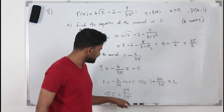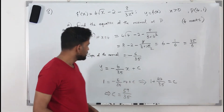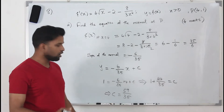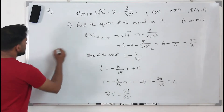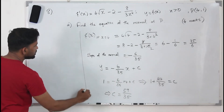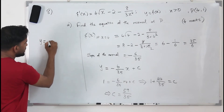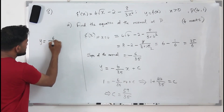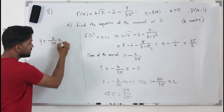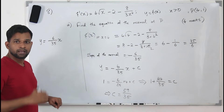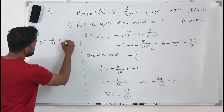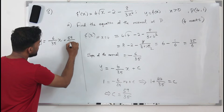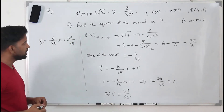This gives c equals 35 plus 24, which is 59 over 35. So our equation of the normal is y equals negative 6 over 35 times x plus 59 over 35. That's the equation of the normal.